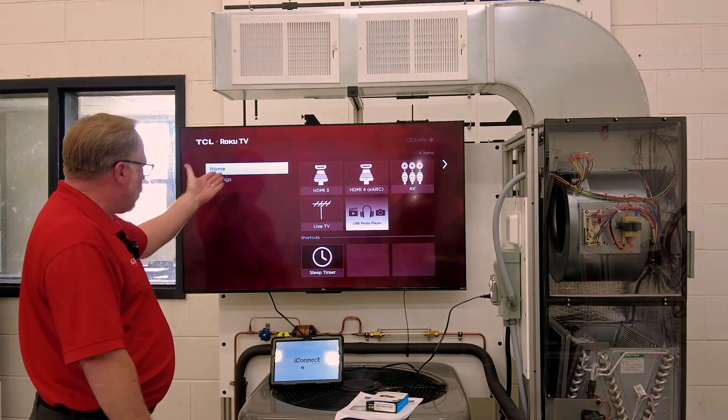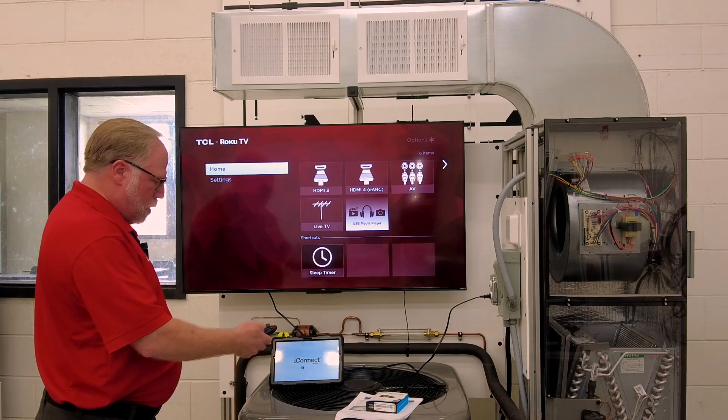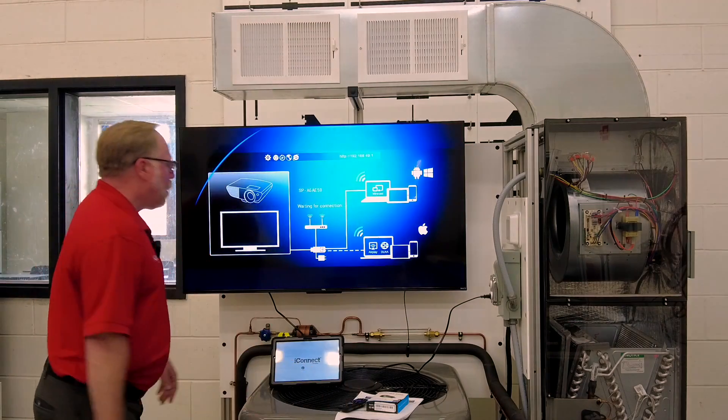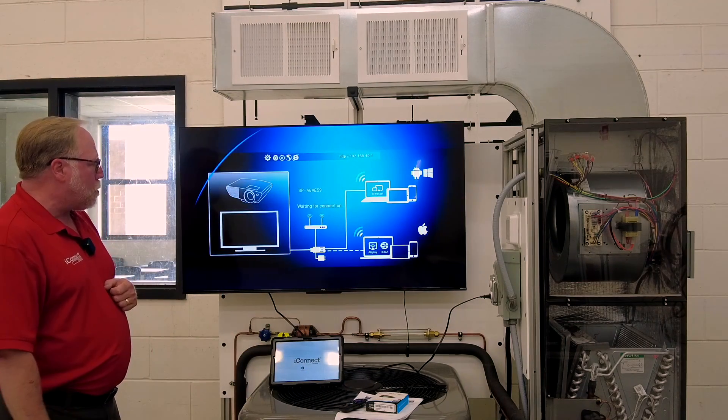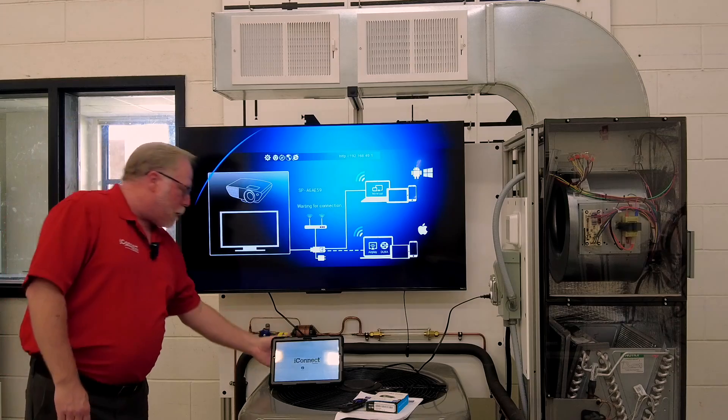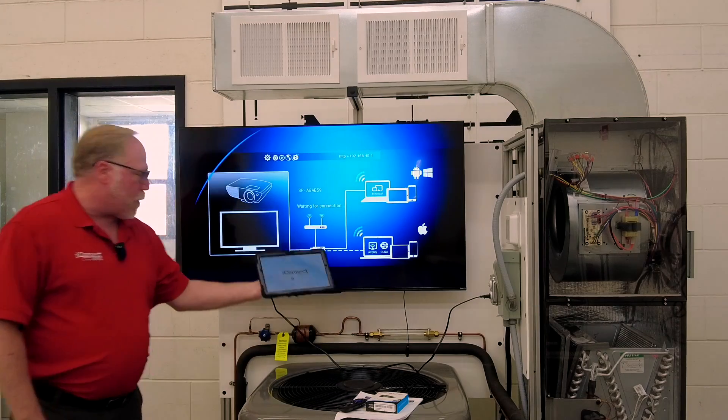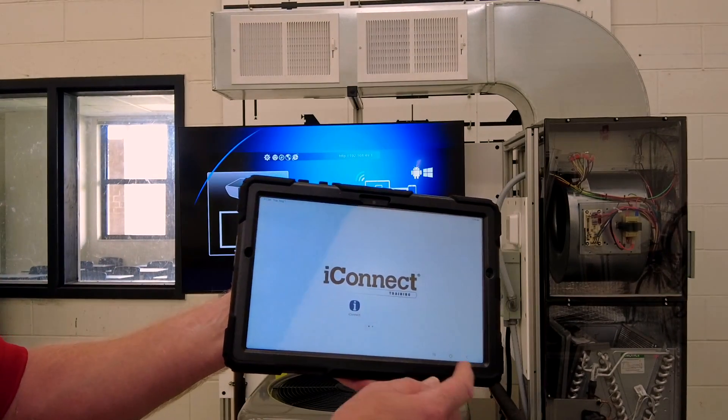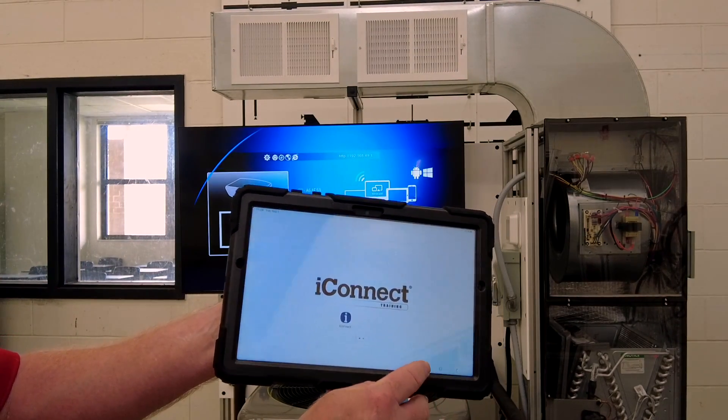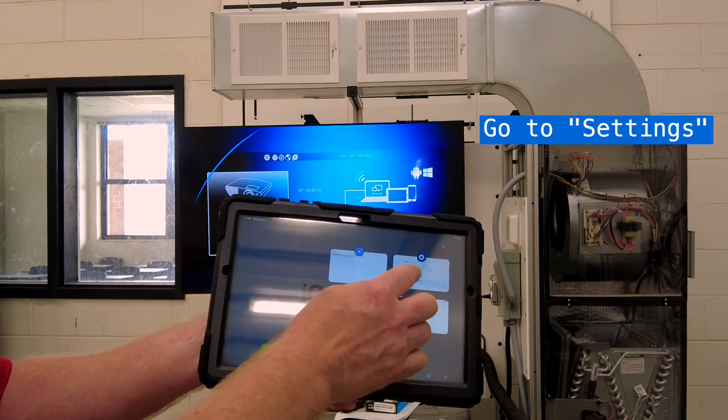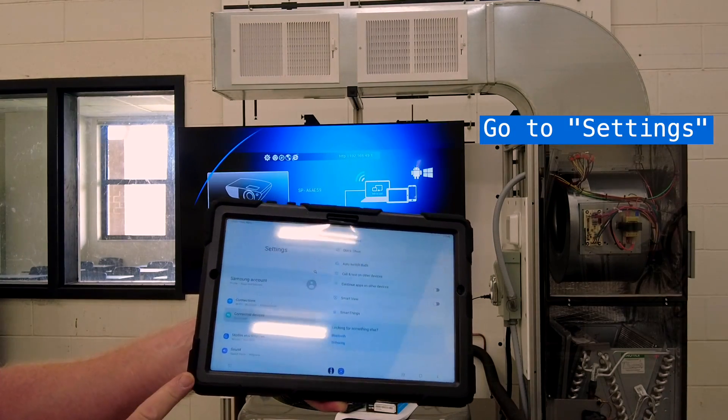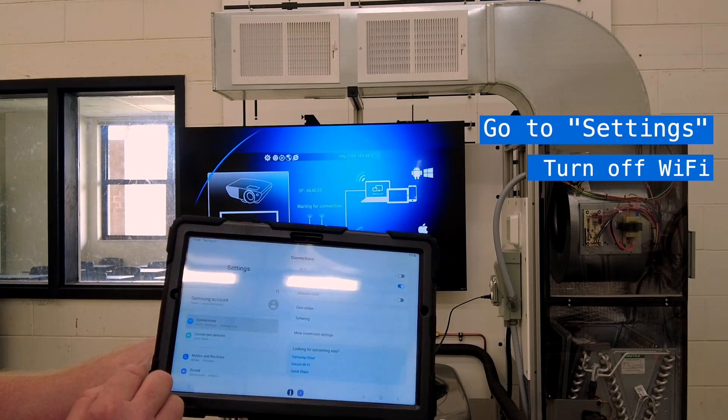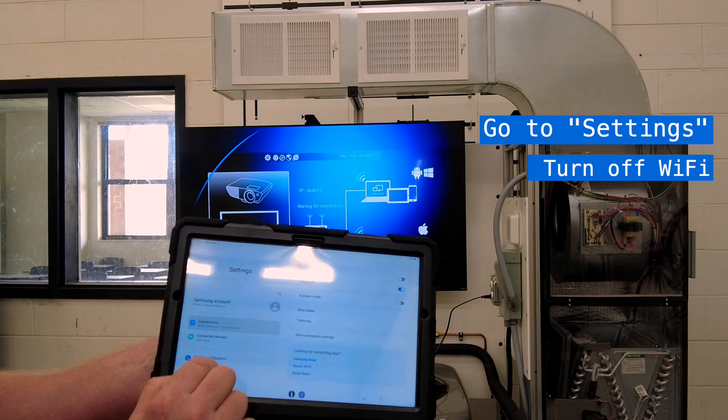I've already done that, so here's my home screen, and I'm going to choose HDMI number three, which is where I have my Anycast. Okay, now it's looking to connect to the tablet. When you power up your tablet for the first time, it's going to take you to our iConnect screen here, and I'm going to go to settings. You want to go to settings on the tablet. You want to make sure that your Wi-Fi is turned off.